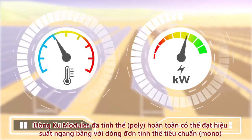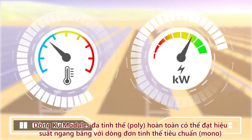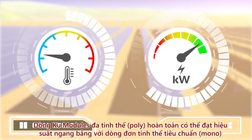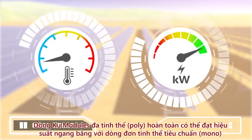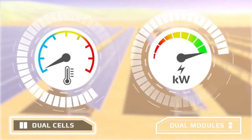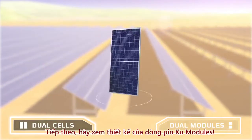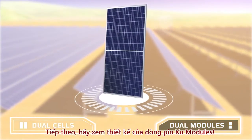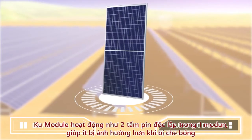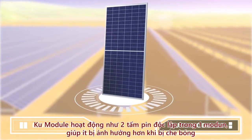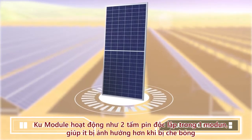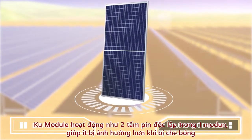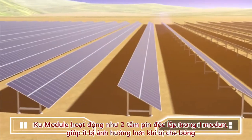Polycrystalline KOO modules are available at the same power classes as standard monocrystalline modules. Now let's look at dual module design. KOO modules operate like two modules in one, which gives KOO modules better shading tolerance.